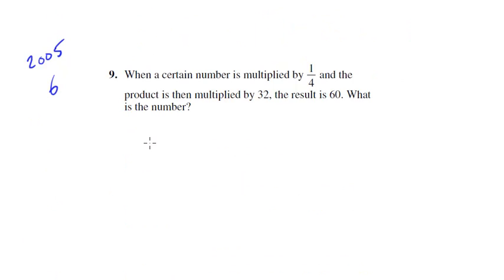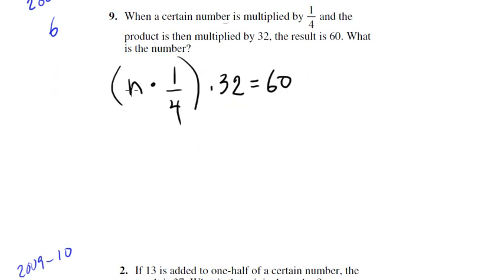When a certain number is multiplied by 1 quarter and the product is then multiplied by 32, the result is 60. What is this number? We got an equation, let's solve. So we get n times, well 1 quarter times 32 is 8, so n times 8 is 60. Divide both sides by 8, we get n is 60 over 8.